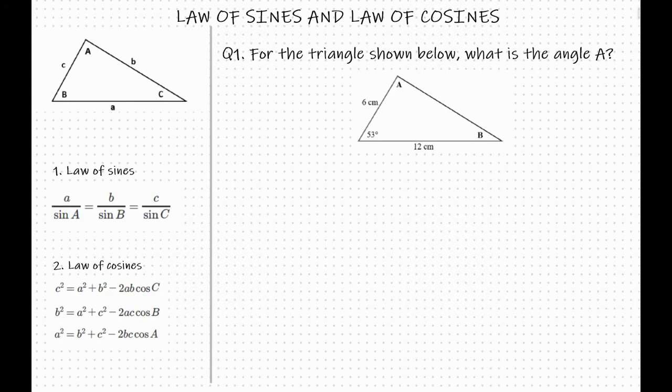So first we need to understand when do we use the law of sines and the law of cosines? Well, it is when we don't have that 90 degree angle, the right triangle.